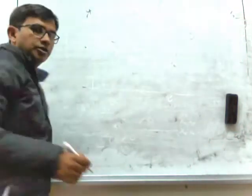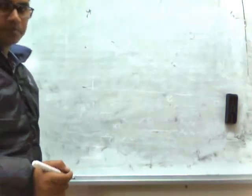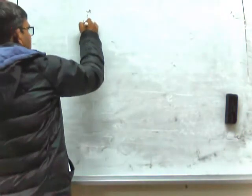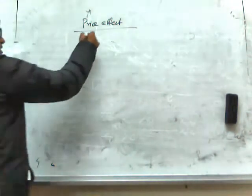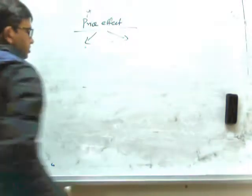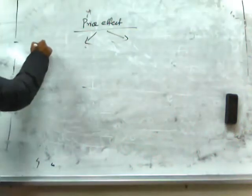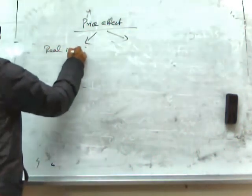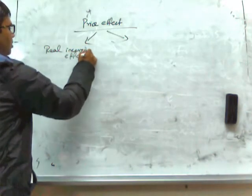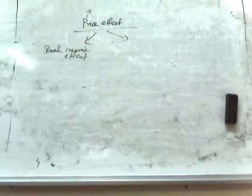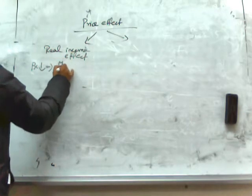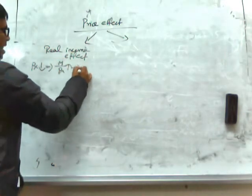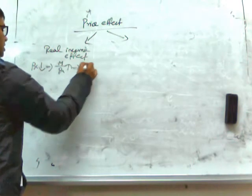Now we will decompose the price effects into its two components by the Slutsky method. Whenever the price changes, it has two effects. Number one is called real income effect or the income effect of price change. That means whenever the price of X falls, the real income of the consumer rises and the demand for X will also rise if X is a normal good.